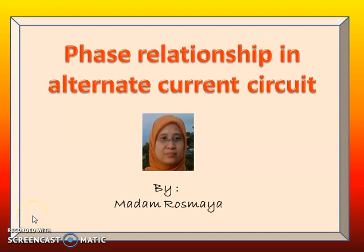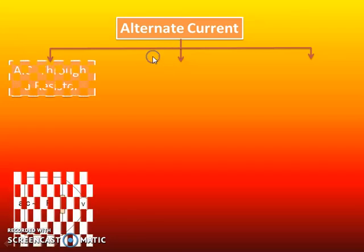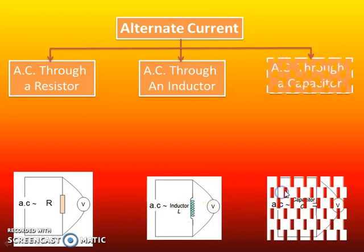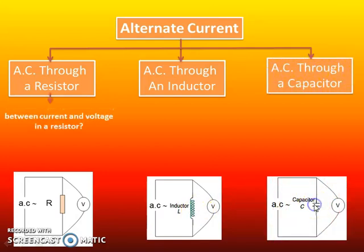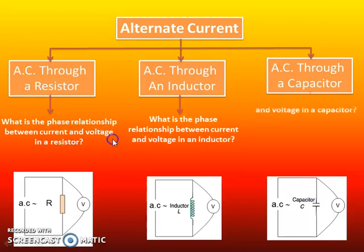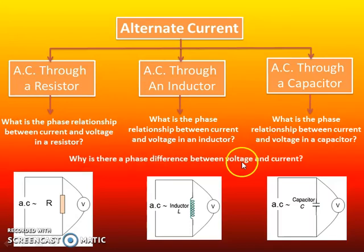Hi everyone, I am Madam Rosmeyer. In this video, we are going to discuss phase relationship in alternate current circuit. The alternate current circuit that we are going to discuss today consists of only resistor, inductor, or capacitor. The phase relationship between current and voltage will be explained one by one using calculation, so that you will know the reason why there is a phase difference between voltage and current.